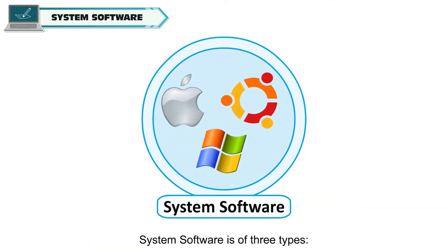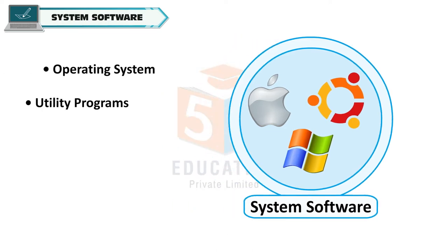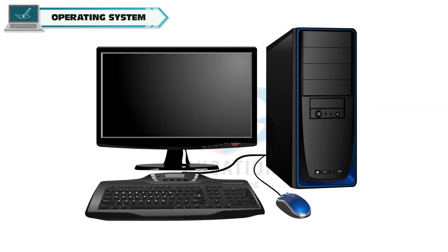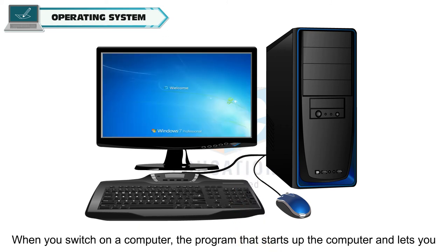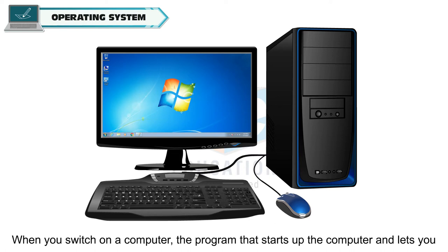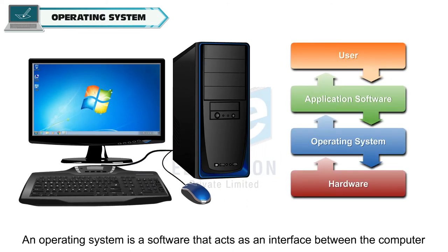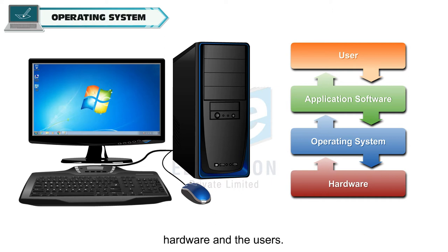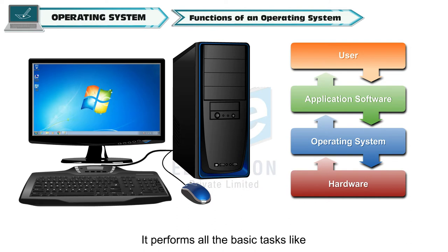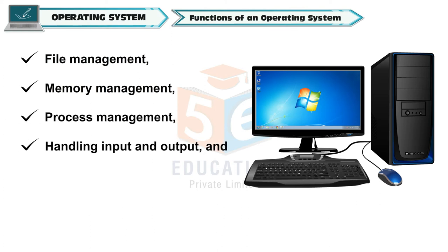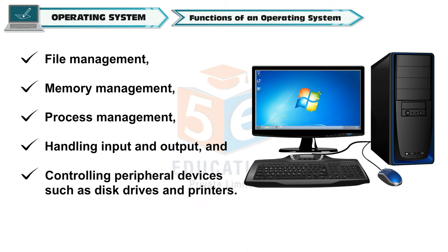System software is of three types: operating system, utility programs and language processors. When you switch on a computer, the program that starts up the computer and lets you give it commands is the operating system. An operating system acts as an interface between the computer hardware and the users. It performs all the basic tasks like file management, memory management, process management, handling input and output, and controlling peripheral devices such as disk drives and printers.